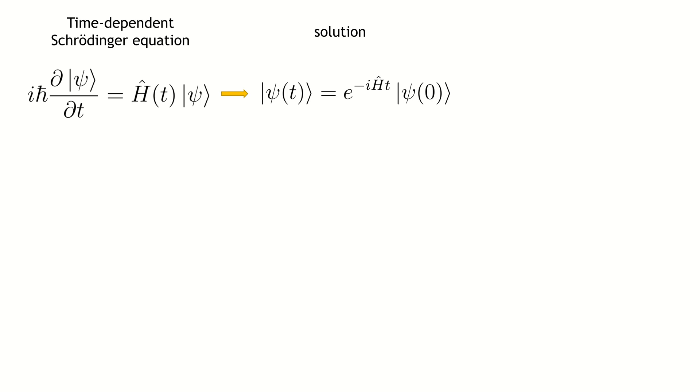The problem is that it is usually extremely difficult to exponentiate this part, since the Hamiltonian may be sparse but still exponentially large.